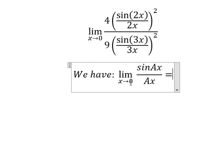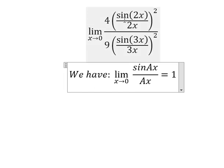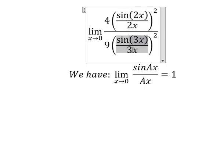When x approach to 0 of sine Ax over Ax, we have 1. That means this one and this one equals to 1 when x approach to 0.